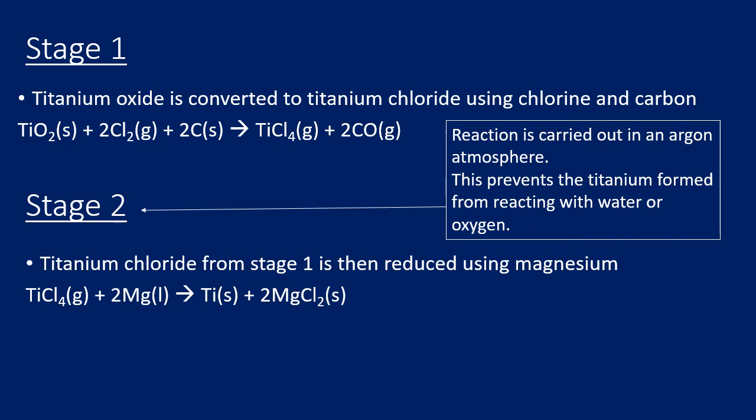Stage two is carried out in an argon atmosphere — that means it's not air, it's argon — because argon is unreactive and it prevents the titanium from reacting with any water or oxygen that would be present in air. If it were done in a normal air atmosphere, oxygen and water would react with the titanium and we wouldn't end up with titanium metal. So it's an argon inert atmosphere.